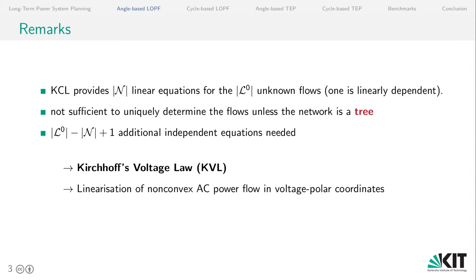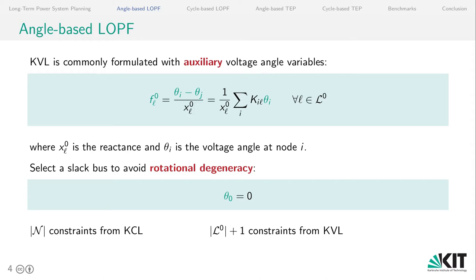And that is what Kirchhoff's voltage law delivers to us. And we derive this Kirchhoff's voltage law by a linearization of the non-convex AC power flow in voltage polar coordinates. And the formulation that is commonly encountered in the literature uses auxiliary voltage angle variables, which are a direct product of the derivation from voltage polar coordinates. So we have the flow, which we relate through the voltage angle differences and the lines reactances using the incidence matrix. Additionally, we need a slack bus to set an angle reference because the L equations above have a rotational degeneracy, meaning that we can add a constant to each of the voltage angles and still get the same results, which can be detrimental to the computational performance of optimization problems.